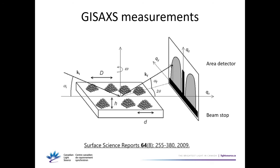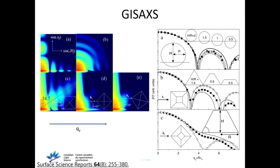The second component: if the nanostructures have any order relative to each other, you get an interference function, which is the Fourier transform of the pair correlation function of the nanostructure positions. So the GISAXS signal has both size, shape, and orientation of the nanoparticles, as well as information on how they are placed relative to each other — even if they have a cap layer and you can't see them with microscopy.